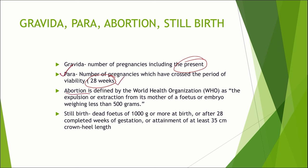Abortion, as per the WHO definition, is expulsion or extraction of the fetus or embryo from its mother when it weighs less than 500 grams — that will be considered as an abortion. Stillbirth is the delivery of a dead fetus which should weigh more than 1000 grams, or after 28 weeks of gestation, or attainment of at least 35 centimeters of crown-heel length. When the fetus comes out after 28 weeks, weighing more than 1000 grams, or measuring more than 35 centimeters of crown-heel length, it will be considered as stillbirth.